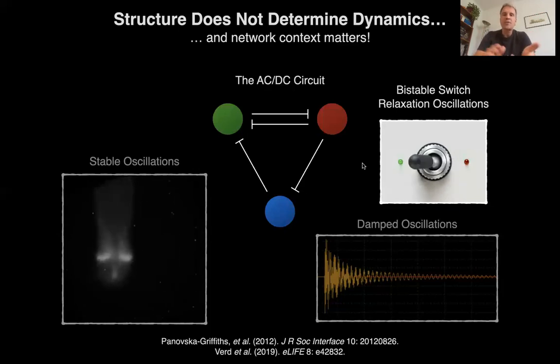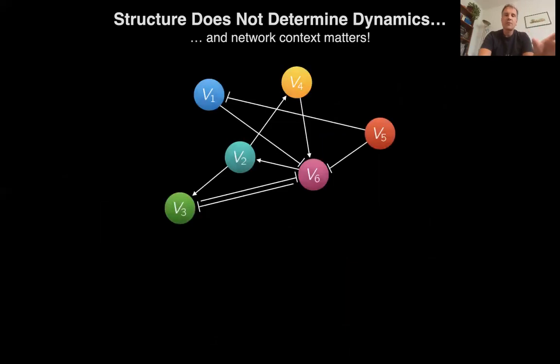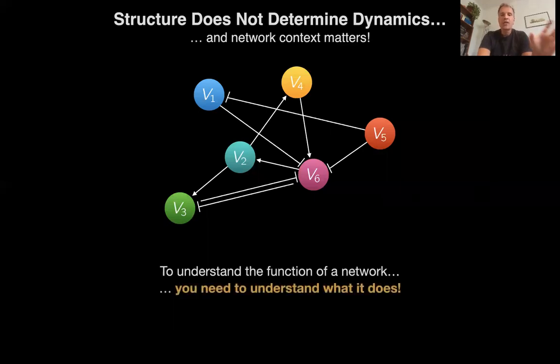Three types of oscillations, switch-like behavior, and also, of course, most of the time, it does nothing at all. So, this is the crux of the matter here. You cannot infer what a complex network does from just looking at its structure. It is impossible to understand the function of a network. You need to understand what it does and what it can do. And this is what we use dynamical models for.